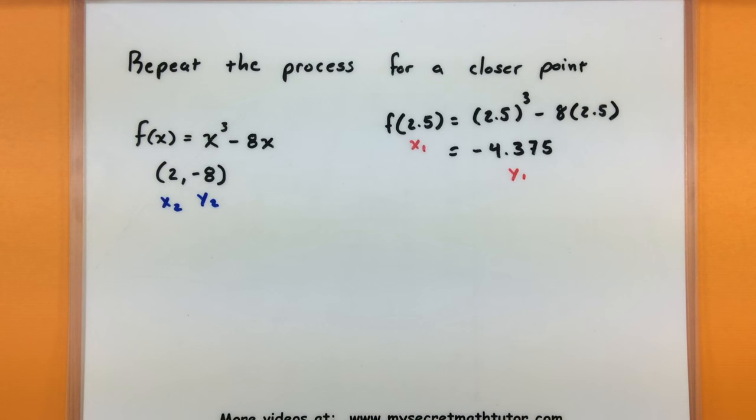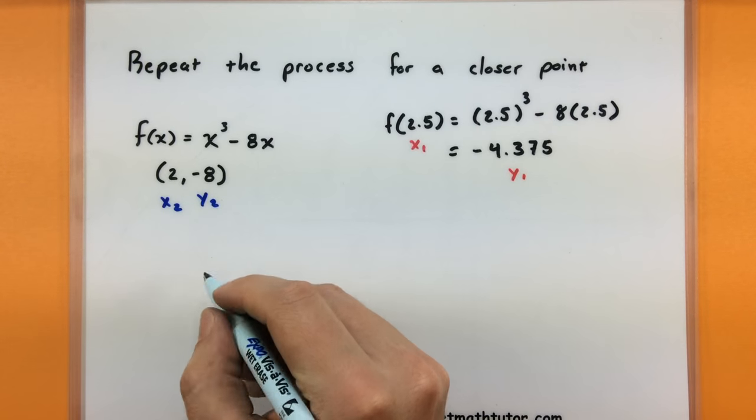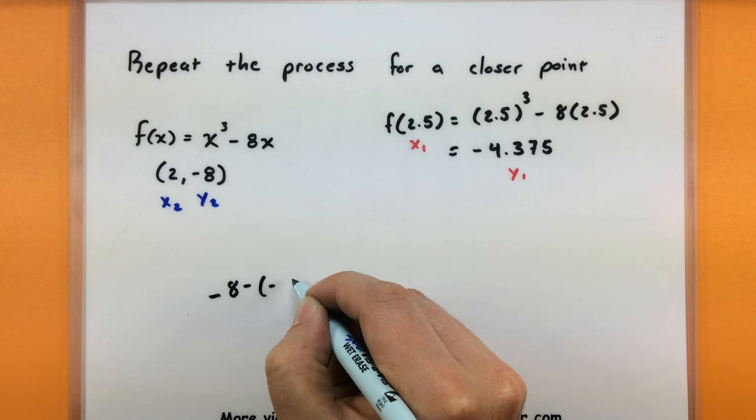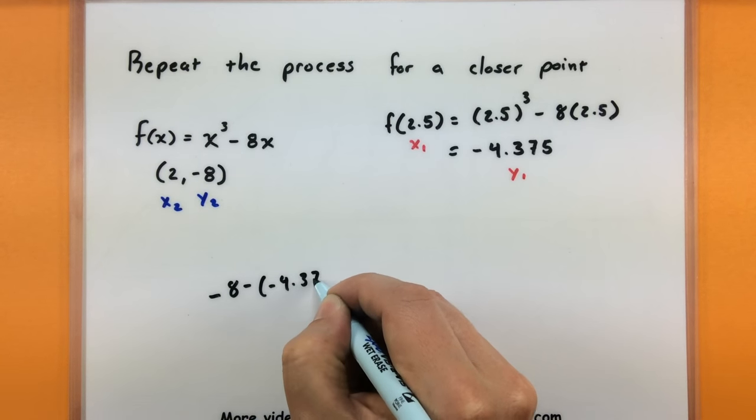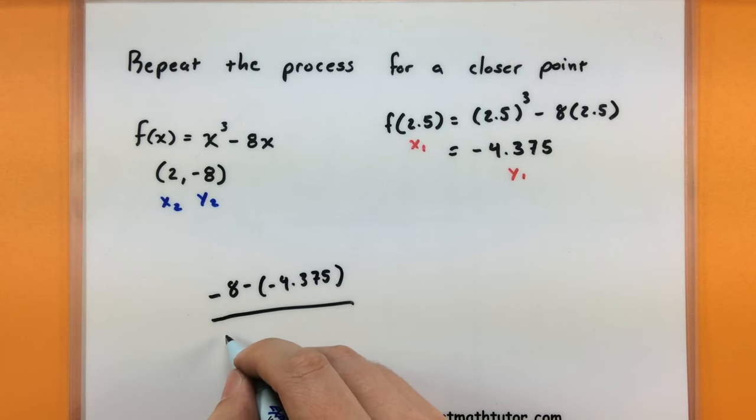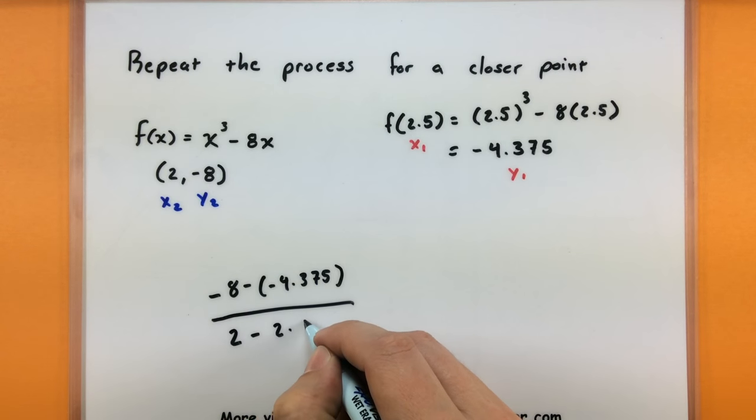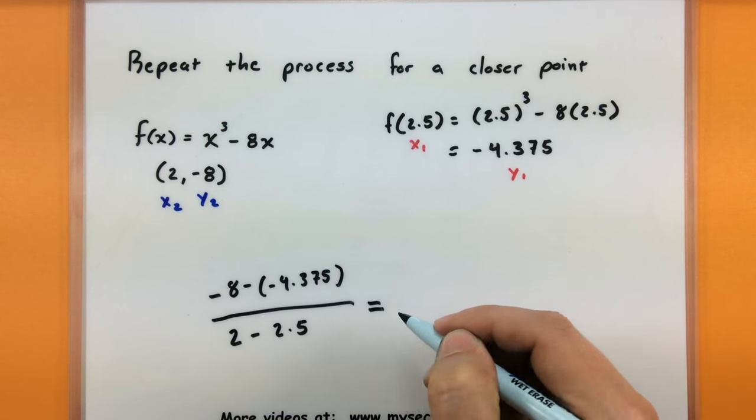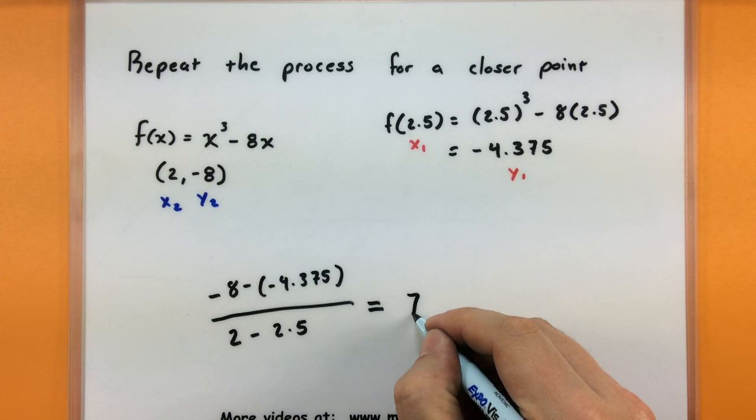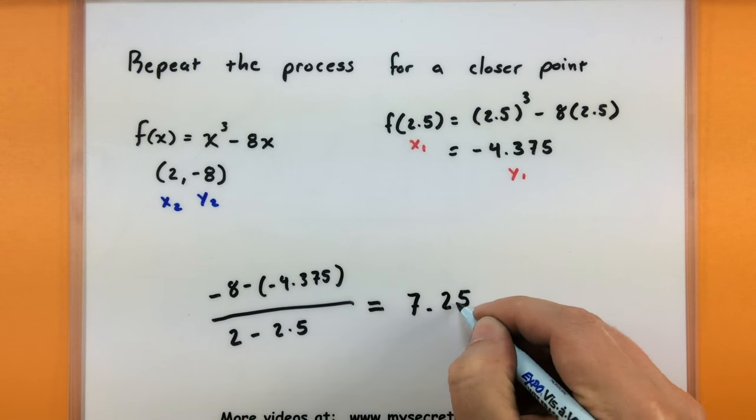So we'll go ahead and figure out what is the slope between these two points. So let's see, negative 8 minus negative 4.375. And let's see, our x value, 2 minus 2.5. Alright, computing those and reducing them, we can now get a brand new slope. 7.25.